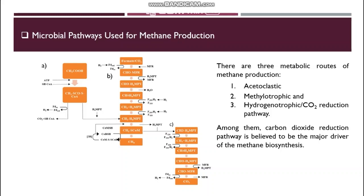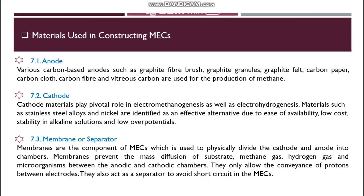The materials used to construct the microbial electrolysis cell system are key to determining the performance of the system. Hence optimization of materials used in a microbial electrolysis cell is critical for an efficient system. The components are anode, cathode, and membrane or separator. In the anode, various carbon-based materials such as graphite fiber brush, graphite granules, graphite felt, carbon paper, carbon cloth, carbon fiber, and vitreous carbon are used, which have high electrical conductivity, chemical stability, anti-corrosiveness, good biocompatibility, low resistance, large surface area, and strong mechanical strength.